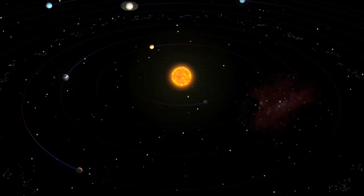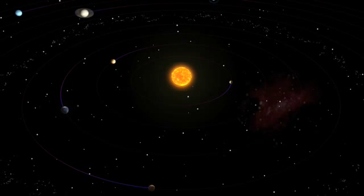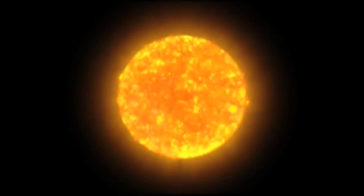As stars go, our Sun is an average yellow star, but it is so massive that it contains 99.8% of all the mass in the solar system.